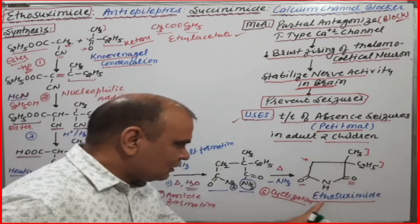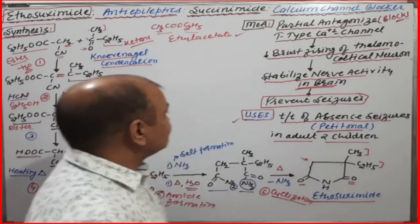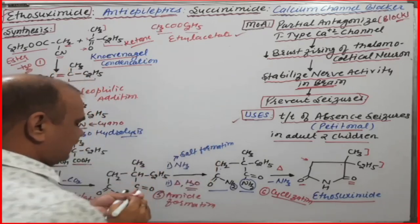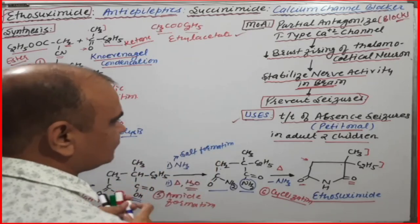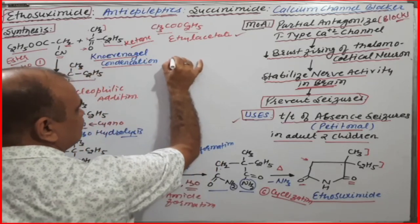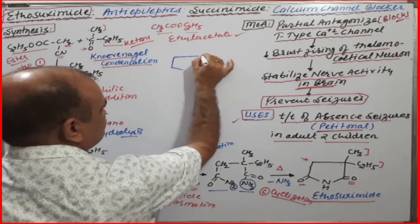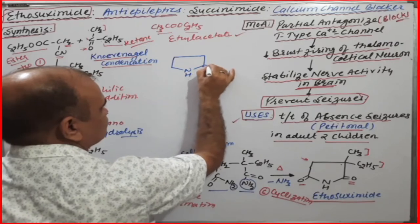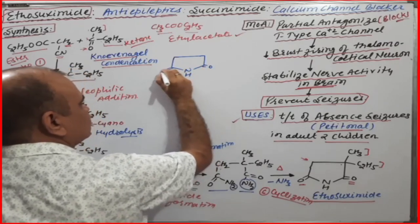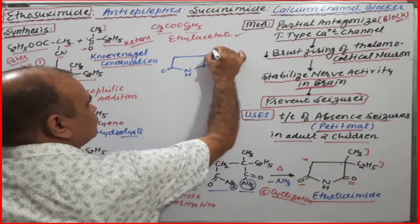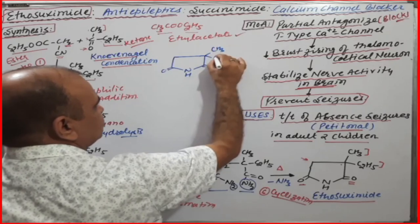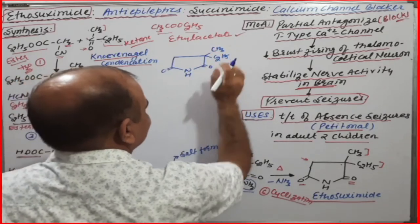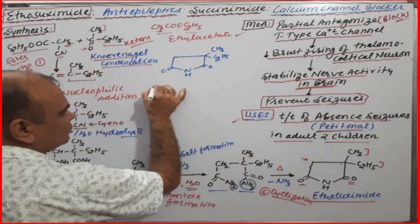Let me redraw the ethosuximide structure for clarity. Ethosuximide has one nitrogen, two keto groups, and one ethyl group as a substituent. This is the final ethosuximide molecule.